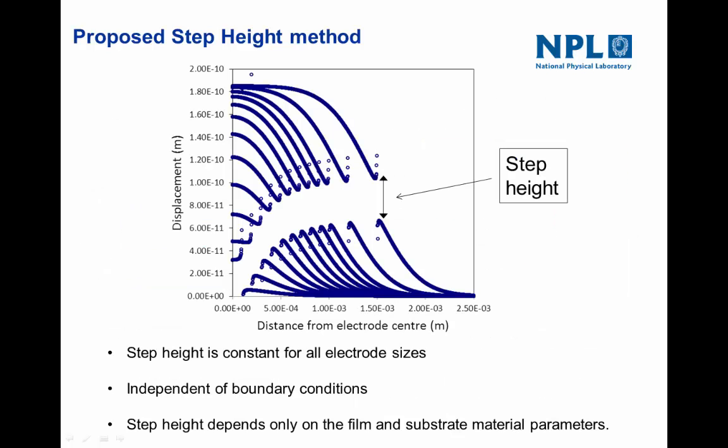In this next graph, the top surface displacement is plotted for a whole range of pad diameters. You can see the step height is constant — what may look like small differences is an optical illusion, and they are in fact identical. The step height is constant for all electrode sizes. It's also independent of the boundary conditions: we've confirmed this for both the fully clamped and simply supported (double beam) cases, as well as the in-plane stretch version. The step height depends only on the film and substrate material parameters, and is completely independent of geometry or boundary conditions.